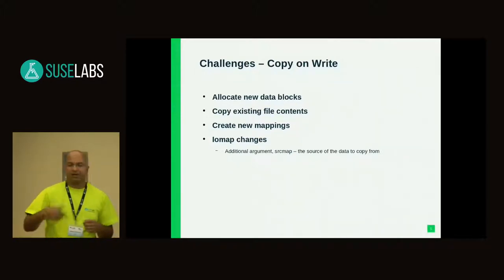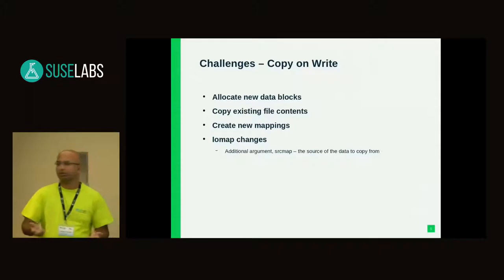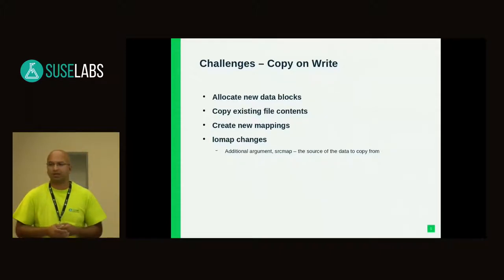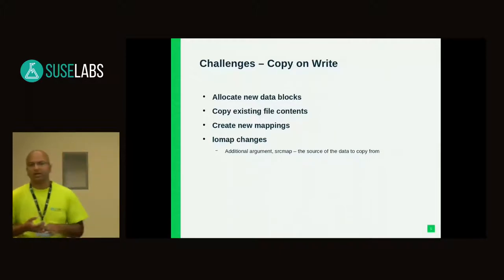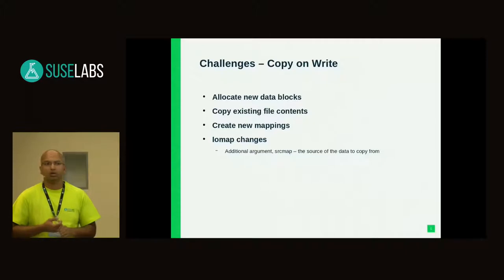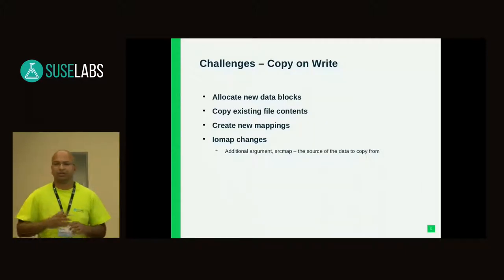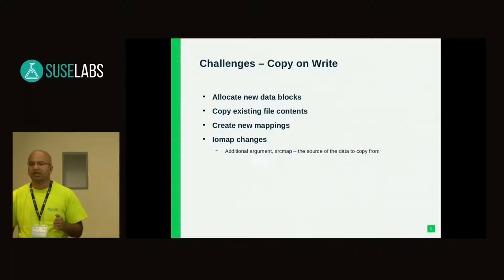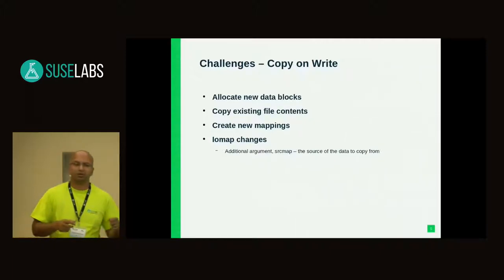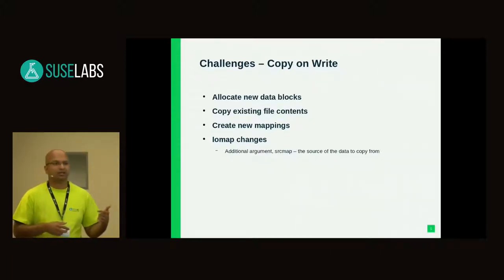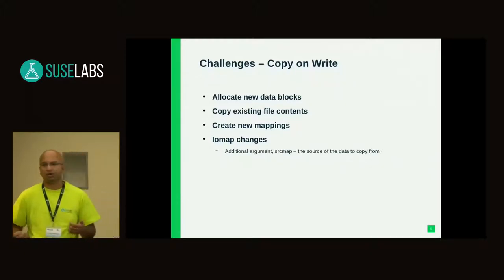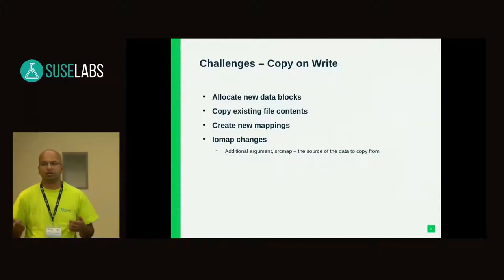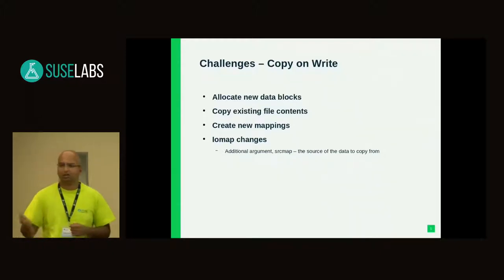So whenever you perform a write, it has to start with creating new mappings, copying the data, and then handing it over to the regular DAX IOMAP RW to continue the mappings. In order to perform this, we had to change the IOMAP sequence altogether — after lots of iterations, the final iteration adds a new IOMAP structure which will be the source. Whenever it sees something in the source, you perform a copy into the new IOMAP and proceed with your write.